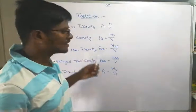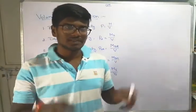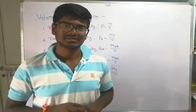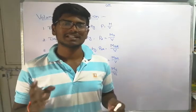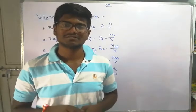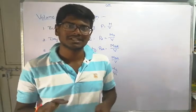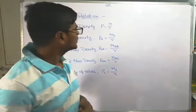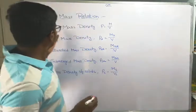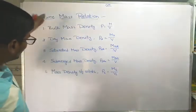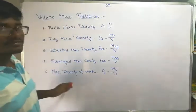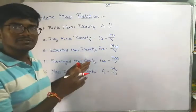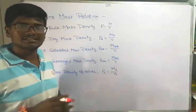First of all, we are going to talk about density. Density is mass divided by volume. We are going to talk about soil, and there are five types of density in soil.